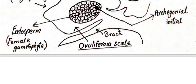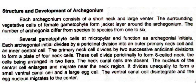Each archegonium consists of a neck and a large ventral region. The surrounding cells of the gametophyte present around this archegonium form the jacket layer around it. The number of archegonia differs in different species and may range from one to six — meaning in some species only one archegonium is produced, while in others two, three, four, five, or six archegonia may be produced in one female gametophyte.